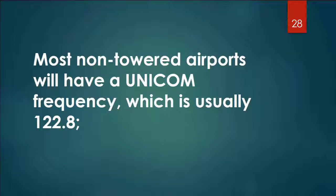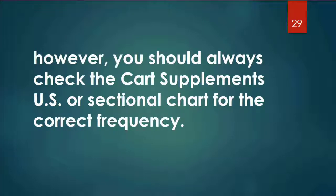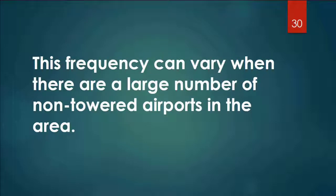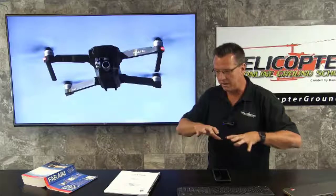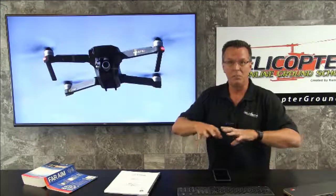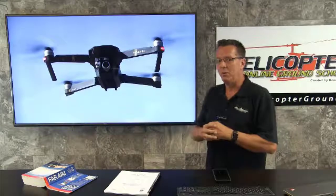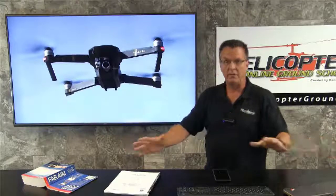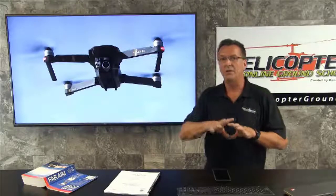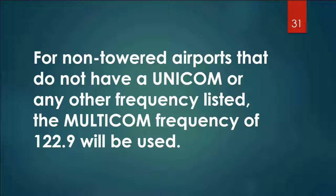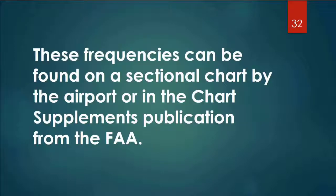Most non-towered airports will have a Unicom frequency, which is usually 122.8, just like here at Plymouth Municipal Airport. However, you should always check the chart supplements or sectional chart for the correct frequency. This frequency can vary when there are a large number of non-towered airports in the area — if they're all on 122.8, it gets too noisy with too many people talking. Airports scattered out around the country that aren't close to each other are usually on 122.8, but near a bigger city with many small airports together, those frequencies will be broken up and could be different. For non-towered airports that don't have a Unicom or any frequency listed, the multicom frequency of 122.9 will be used. These frequencies can be found on a sectional chart or in the chart supplement from the FAA.